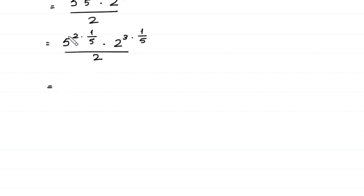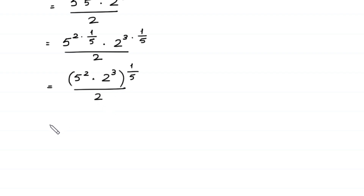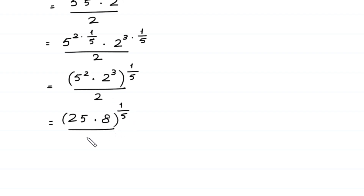Next, we can write 5 squared times 1 over 5, times 2 cubed times 1 over 5, as 5 squared times 2 cubed, whole to the power 1 over 5, divided by 2. This equals 25 times 8, whole to the power 1 over 5, divided by 2. And this equals 200 to the power 1 over 5, divided by 2.